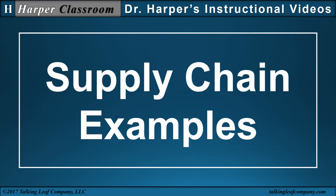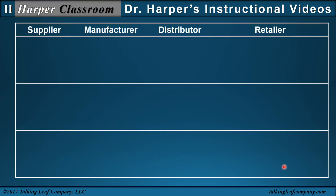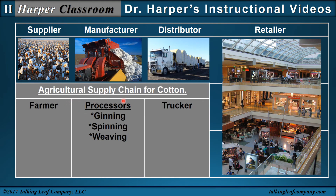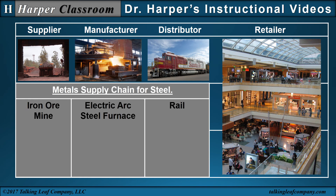Let's consider some supply chain examples using a four-stage model. First, the agriculture supply chain for cotton. The supplier could be a cotton farmer. The manufacturer could consist of ginning, spinning, and weaving processes. The distributor could be a trucker transporting raw material or fabric, eventually getting to the retailer and the customer. Next is the metal supply chain for steel. Start with the iron ore mine. The manufacturer in this example is the electric arc steel furnace, where they're combining iron and alloys for different grades of steel. Then the distributor — here's a rail shipping to different points — and eventually it gets to the retailer and the customer.